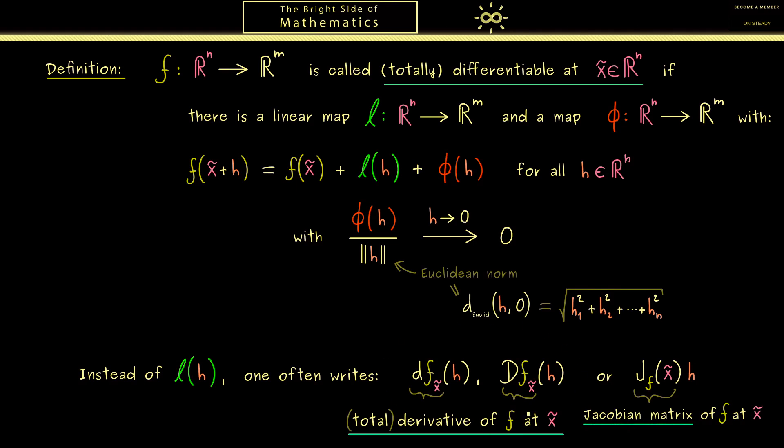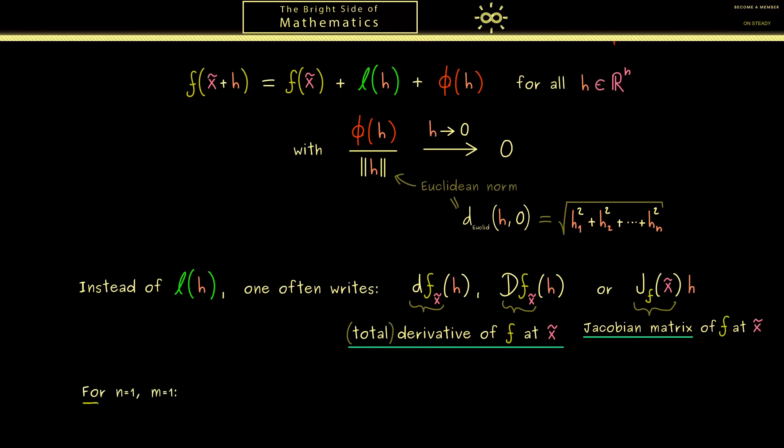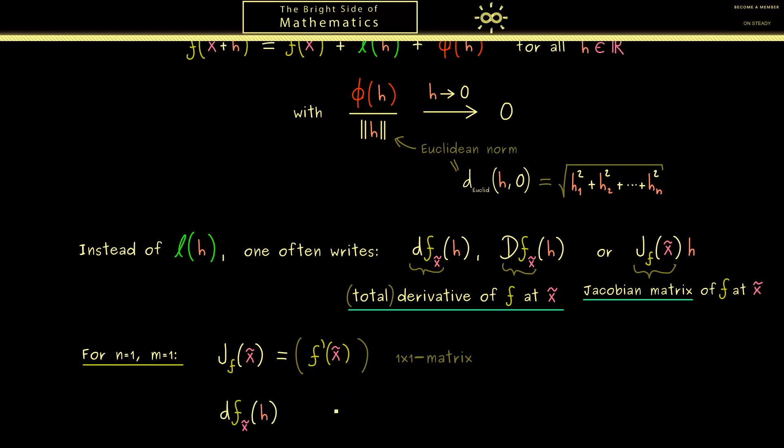Maybe for a better visualization, let's look what all these objects are in the one dimensional case. In other words, if n and m are both equal to 1, then in this case if the function f is totally differentiable at x tilde, jf at x tilde is given by the derivative of f. More precisely, we would say it's a 1x1 matrix with the number f prime at x tilde. So obviously not so complicated at all. Moreover, if we would write it as an abstract linear map df of h, we simply would have f prime of x tilde times h. Hence you see obviously the one dimensional case is included in the definition above.